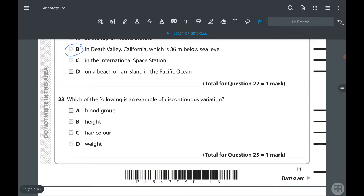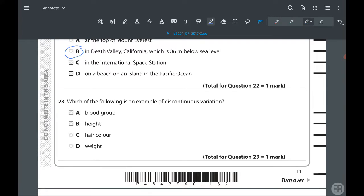23: which of the following is an example of discontinuous variation? That's also not in our syllabus anymore. The answer is blood group.